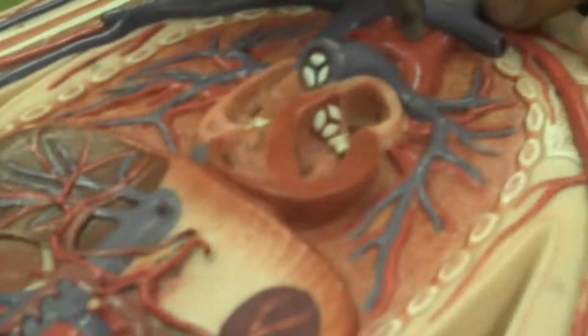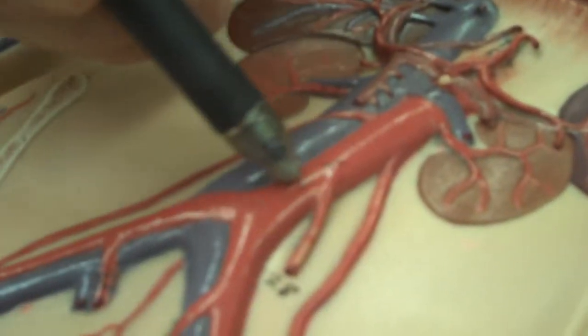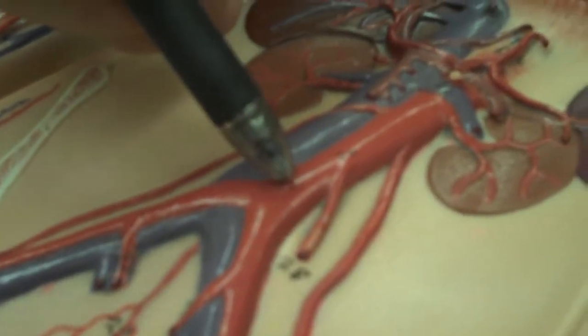On this model, you can see this starts the descending aorta, and the descending aorta actually goes all the way down here, so it goes most of the body.